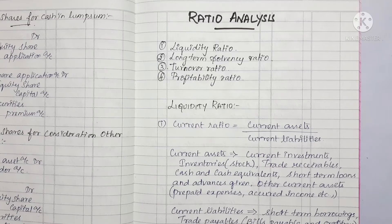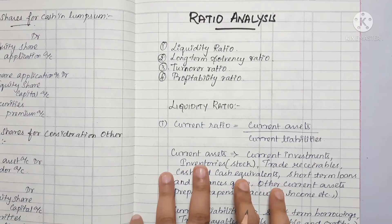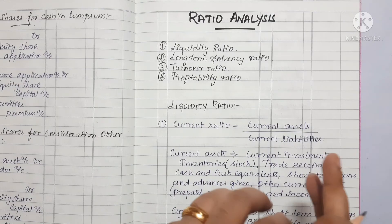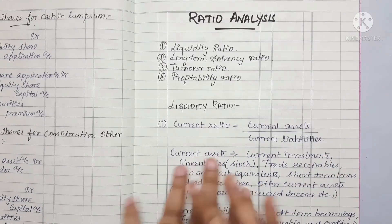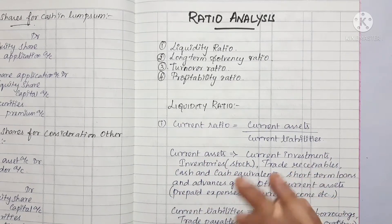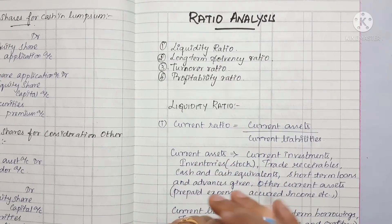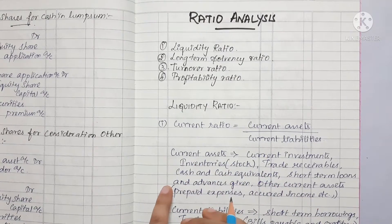Hi friends, welcome back to my channel Savvy Learner. We are going to talk about the 12th accountants video in Chapter 9 — Ratio Analysis. We are going to talk about formulas in this video, listed one by one, so you can use it for revision.